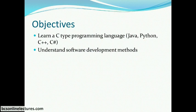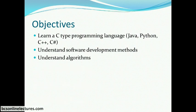The next objective is you need to understand software development methods — what methods are available and what are the suitable methods to develop a particular software according to a given scenario or situation. Then you need to understand algorithms. As an IT professional, you should be able to read code and understand how it works, what the functions and methods are, what the inputs and outputs are, and understand the process.